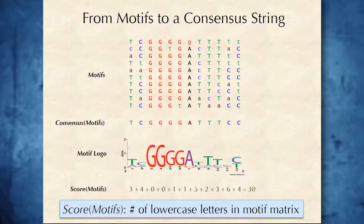Taking the capital letter in each column, we construct a consensus string for this particular choice of K-mers, which will also provide us with a candidate motif. Our goal is to choose K-mers from the underlying strings so that they produce the most conserved motif matrix, then simply take the consensus string as our desired biological motif. We define the score of a motif matrix as simply the number of lowercase letters in the matrix, which for this choice of motifs equals 30.